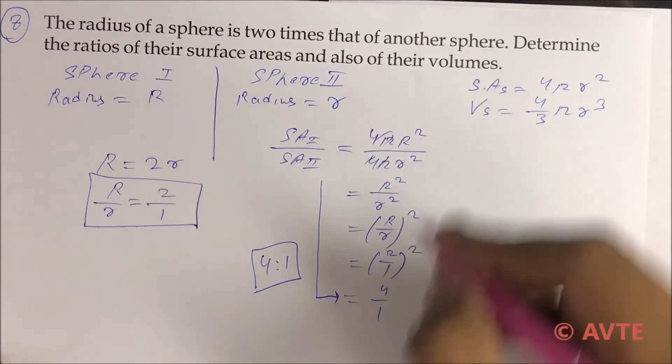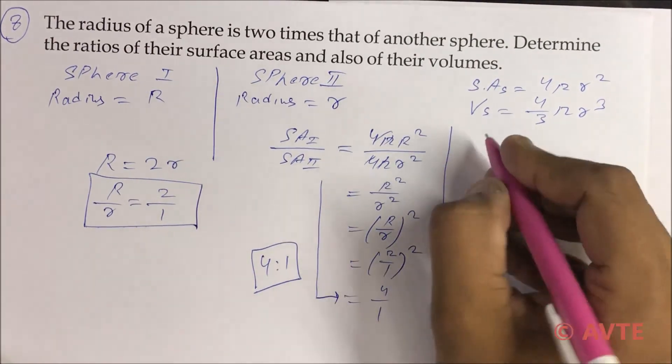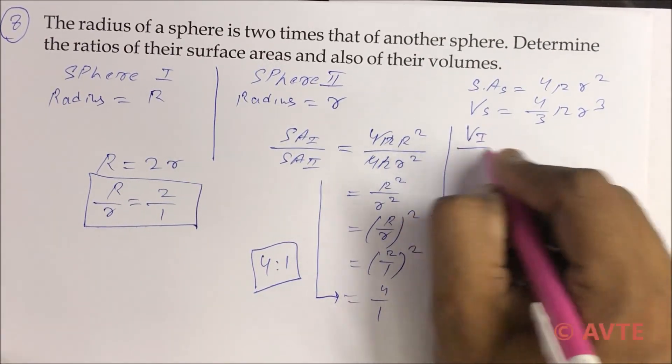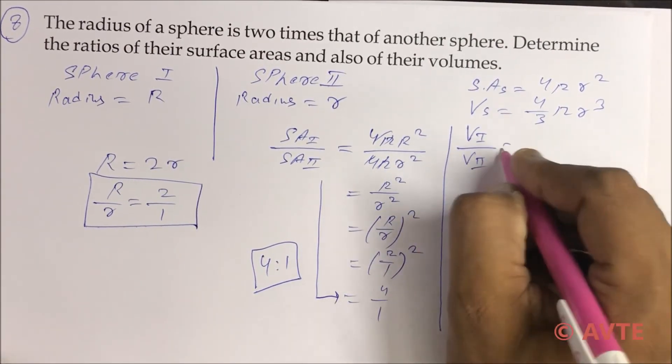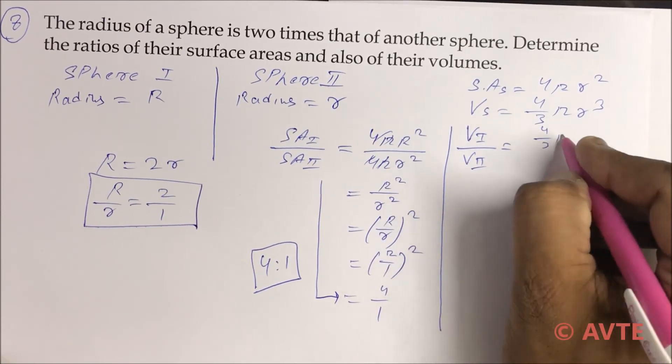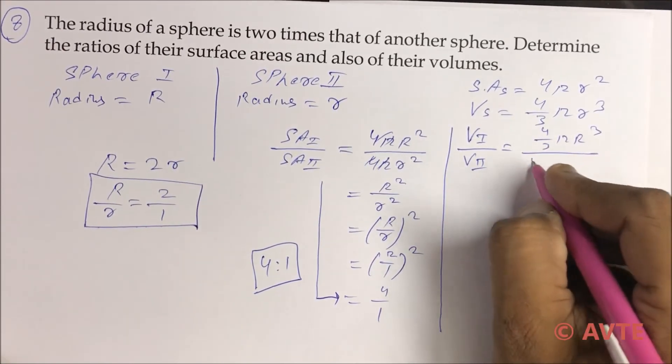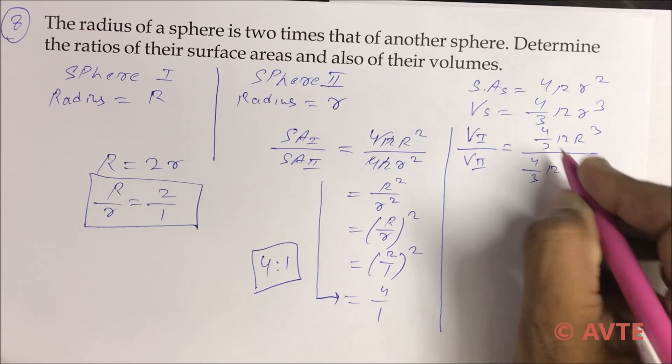Is it clear? And the second is we have to find the volume of 1 upon the volume of 2. That is 4 by 3 pi R cubed upon 4 by 3 pi r cubed.